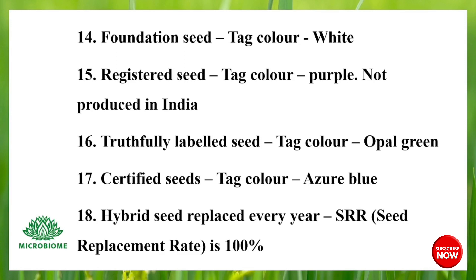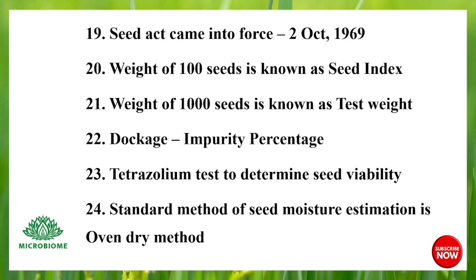Hybrid seeds are replaced every year, and the seed replacement ratio is 100%. The Seed Act came into force on 2nd October 1969. The weight of 100 seeds is known as seed index. The weight of 1000 seeds is known as test weight. Dockage refers to impurity percentage. The tetrazolium test is used to determine seed viability. The standard method of seed moisture estimation is the oven drying method.